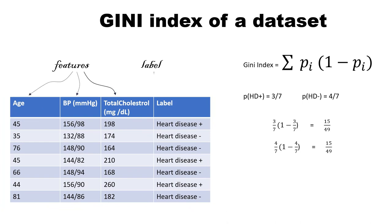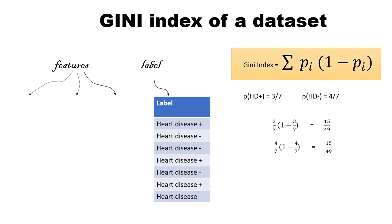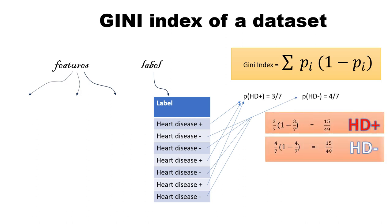In this example we have two classes: heart disease present and heart disease absent. So we find p(1-p) for both the classes and then add them. Adding them gives us the Gini index of this entire dataset.